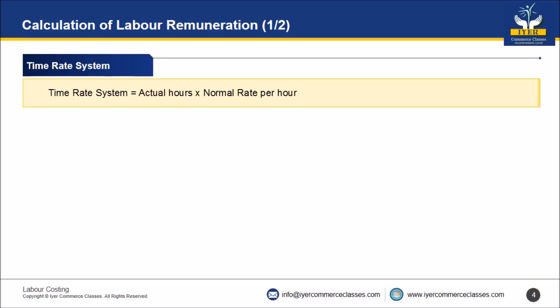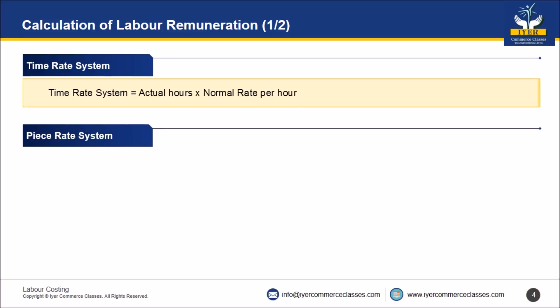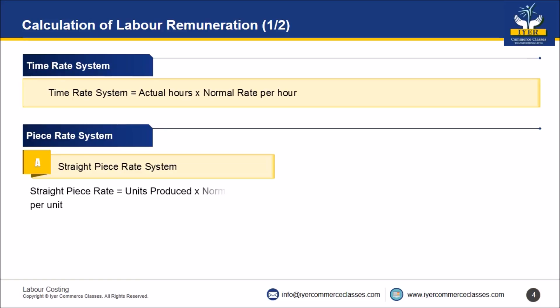Second is the piece rate system, divided into three parts. The first is the straight piece rate system, where wages are paid on the basis of units produced. Formula: units produced multiplied by the normal rate per unit.